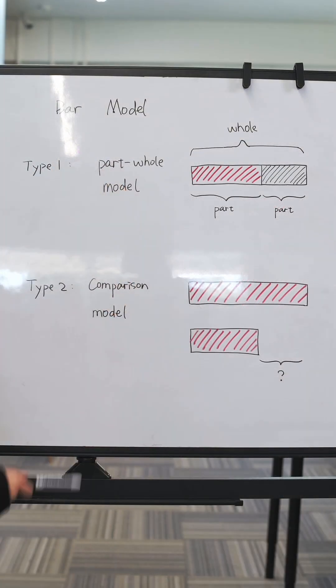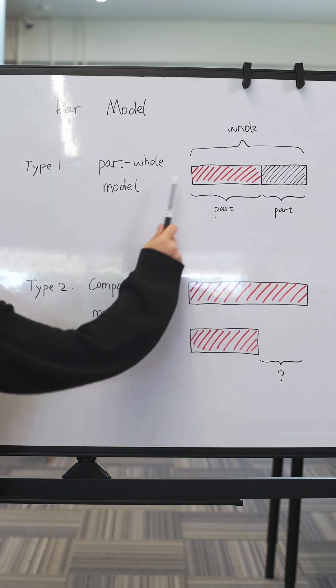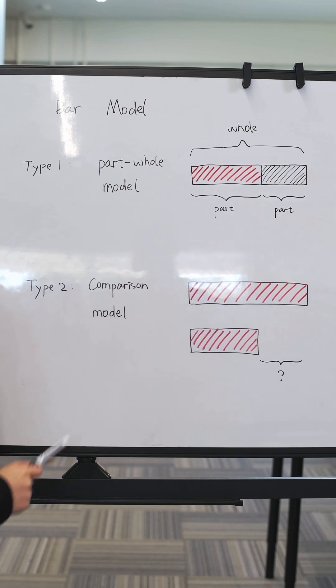There are two main types of bar models. Type 1 is the part-whole model. This is when we know the total and we break it into parts, or the other way around. It's great for addition and subtraction problems.